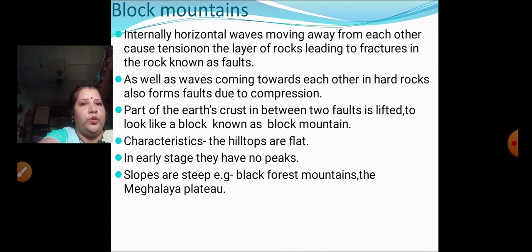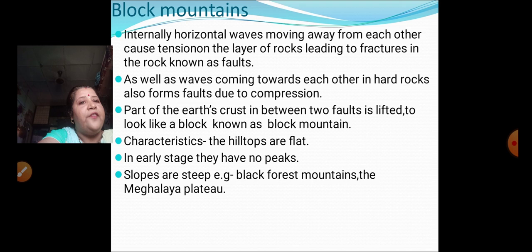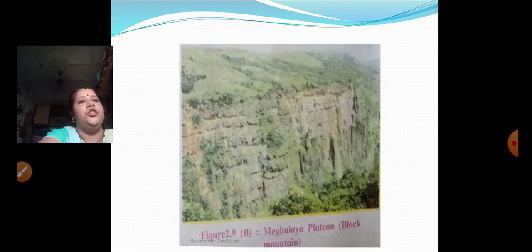What are the characteristics of block mountains? When a block mountain is formed, the hilltops are flat — meaning the topmost point of the mountain is flat. In the early stage they have no peaks. The slopes are very steep. Examples of block mountains include the Black Forest mountains and the Meghalaya plateau. You can see in the picture the Meghalaya plateau, which is also a block mountain.